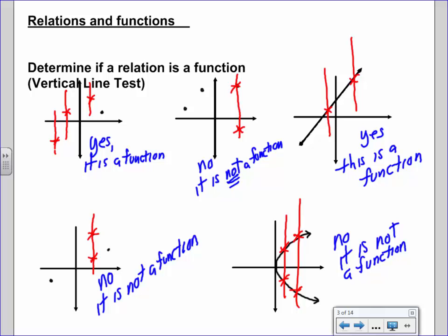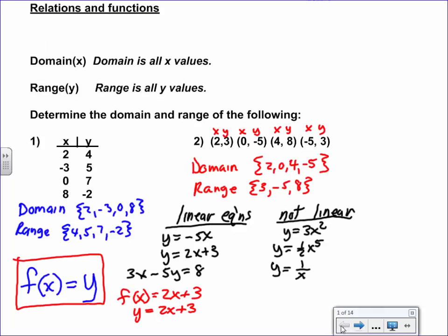Okay, so what did we learn today? Domain is all X values. Going back to our previous example, may be written as ordered pairs and columns. Domain is all the X values, range is all the Y values. And if a value repeats like it did here, don't write it twice when you're naming the range or domain.